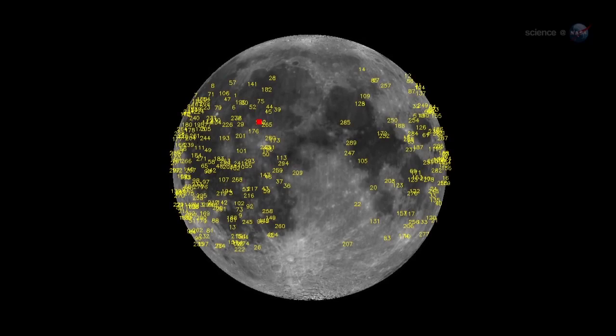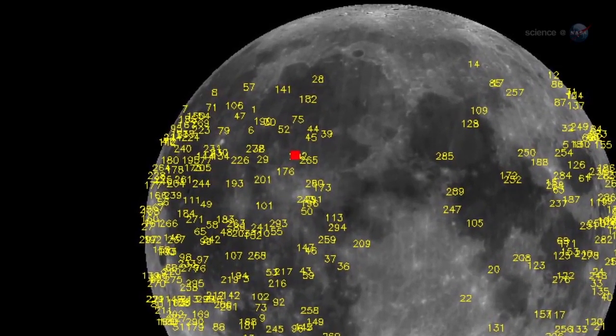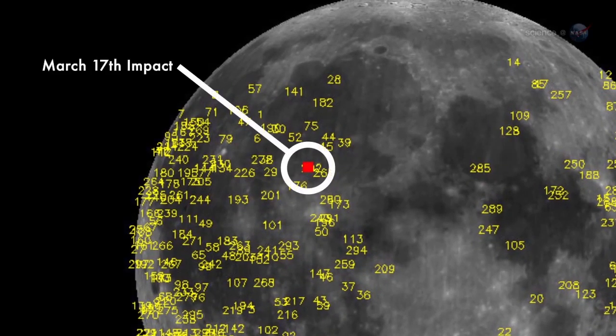Since the monitoring program began in 2005, NASA's Lunar Impact Team has detected more than 300 strikes, most orders of magnitude fainter than the March 17th event.